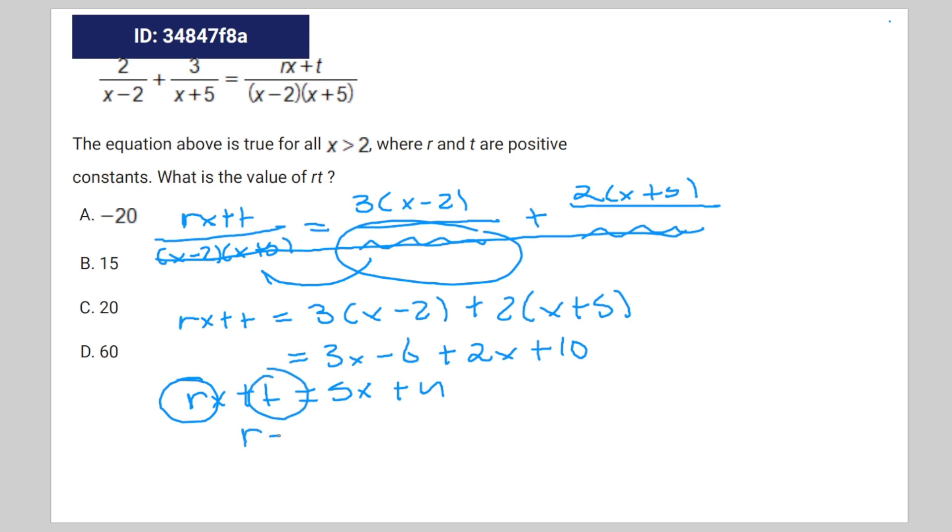Therefore, r is going to be equal to 5, and t is going to be equal to 4. Therefore, r times t is going to be equal to 20.